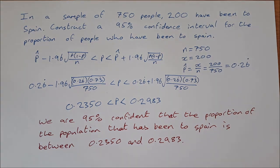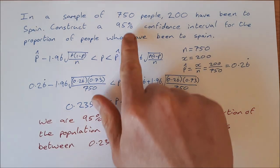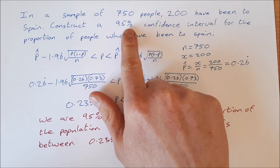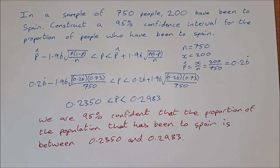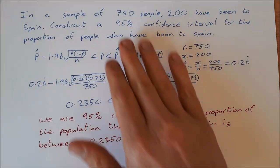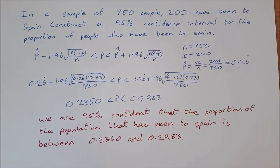That's an introduction to population proportions. In the next video we'll look at different confidence levels — 90% and 99% — and also how to work backwards to find the required sample size when proportions are given. Thanks for watching and I'll see you next time.